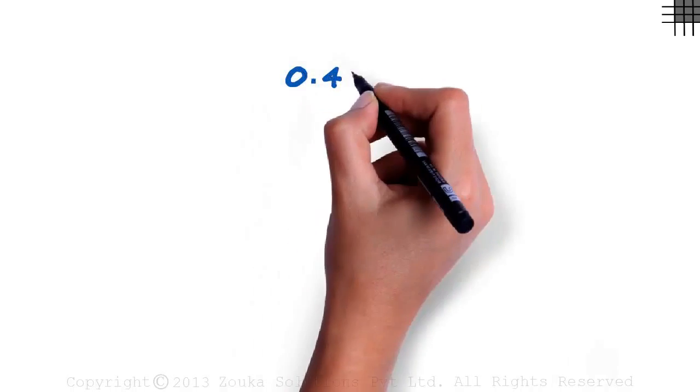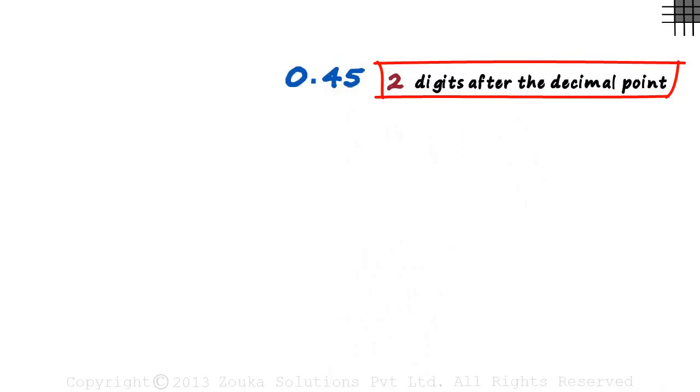So let's look at our first example, 0.45. There is only one thing you need to observe here. It's the digits after the decimal point. In this case, we have 4 and 5. Two digits after the decimal point. This was the most important step.